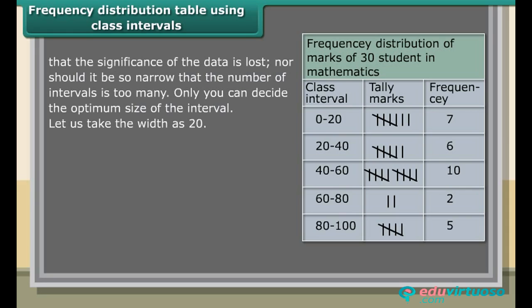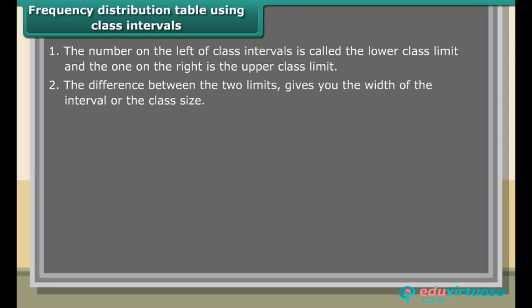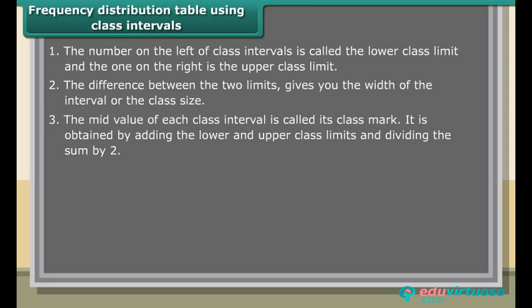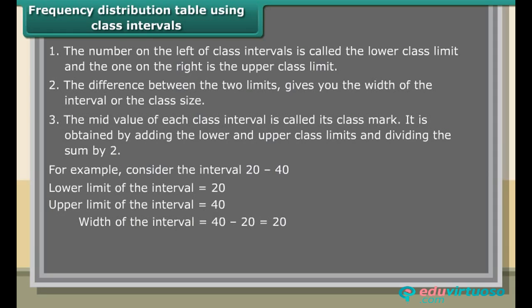Let us take the width as 20. The number on the left of a class interval is called the lower class limit, and the one on the right is the upper class limit. The difference between the two limits gives the width of the interval or class size. The mid-value of each class interval is called its class mark, obtained by adding the lower and upper class limits and dividing by 2. For example, for the interval 20 to 40: width = 40 − 20 = 20; class mark = (20 + 40) / 2 = 30.